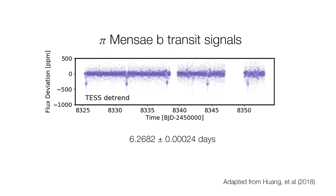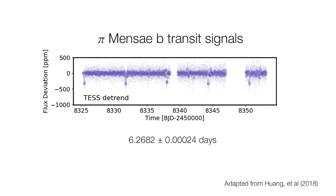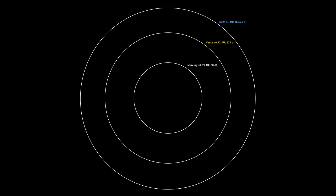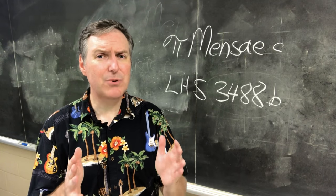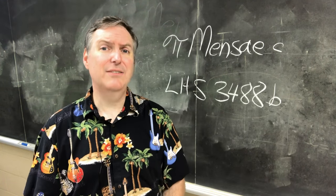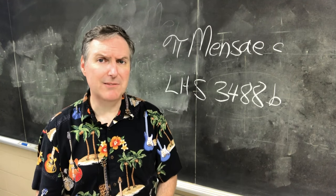It orbits its host star once every 6.3 days. Yeah, its year is less than one of our weeks. But in order to have such a short orbital period, Pi Mensa C has to orbit at a distance of just 0.07 astronomical units. That's about 7% the distance from the Earth to the Sun. So yeah, New Year's parties every week or so? Not bad, right?